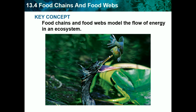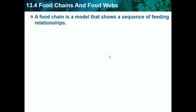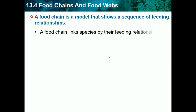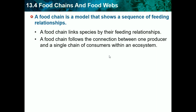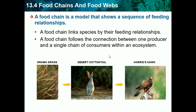You've probably seen a food chain or a food web in elementary school — it basically shows how energy flows in an ecosystem. Ecologists study how plants, animals, and everything in an ecosystem interact. A food chain is a model that shows a sequence of feeding relationships, linking species by their feeding relationships and connecting one producer to a single chain of consumers. We usually always start with a producer first, like grass, which is a producer because it takes energy from the sun.